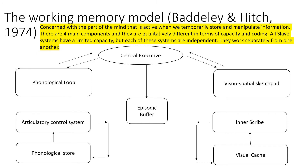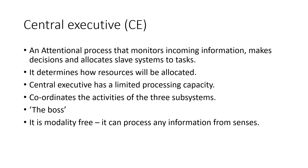The phonological loop also has a phonological store and an articulatory control system, and the visuospatial sketchpad has an inner scribe and a visual cache. The central executive is an attentional process that monitors incoming information, makes decisions, and allocates slave systems to tasks. It determines how resources will be allocated and has a limited processing capacity. It coordinates the activities of the three subsystems and is modality free.